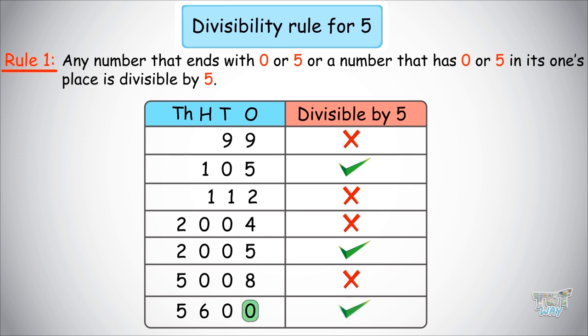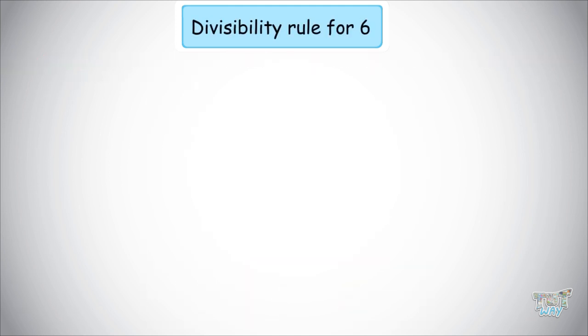Therefore, it is very simple to find whether or not a number is divisible by 5. You just have to check if the ones place digit is 0 or 5. Now let's move on to the next number, 6.